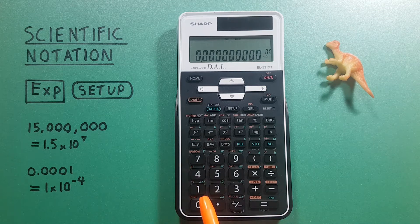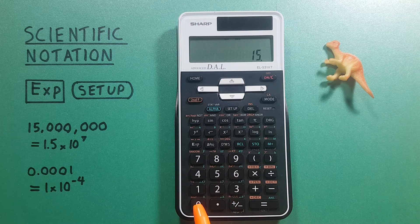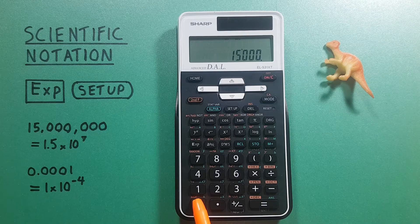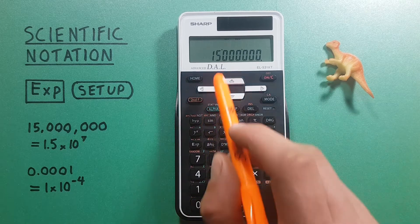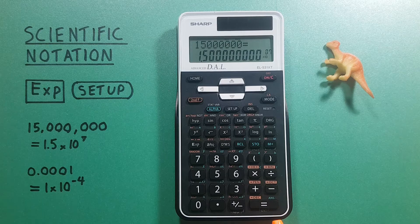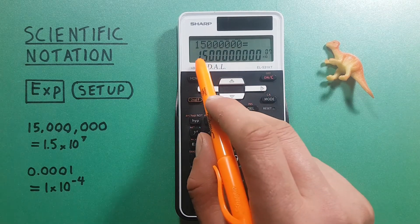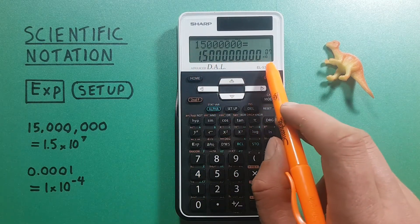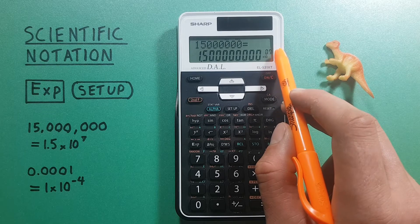So if we enter 15 million on the screen like that and press enter, we see it converts to 1.5 times 10 to the seventh power or 15 million.